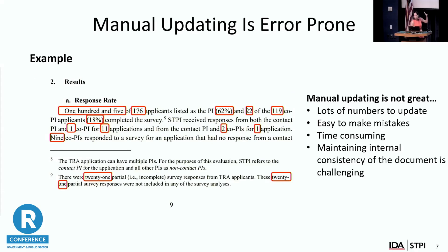I'm going to give one two-and-a-half-sentence example. This is the first result from our applicant survey — we have simple things like a response rate, 105 of 176 applicants listed as a PI, the percent of those, and 22 of the 119 co-applicants completed the survey. Everything that's in a red box will have to be updated for the next year — that's a lot of things in a red box for just two-and-a-half sentences.